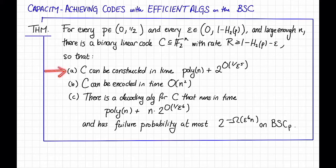First, C is an explicit code. In particular, it can be constructed in time polynomial in n, plus some constant, as long as epsilon is a constant, with some unspeakable dependence on epsilon.